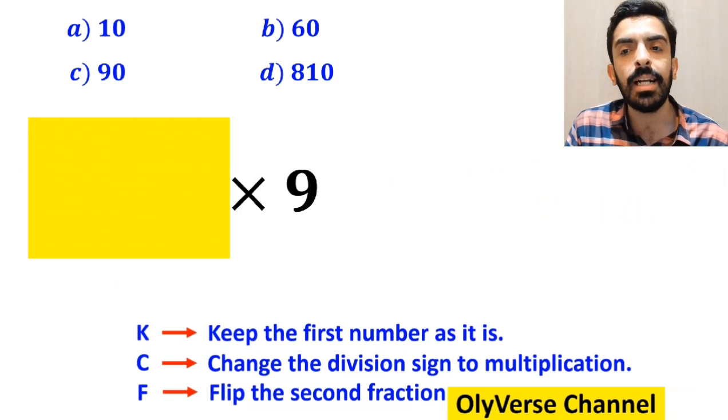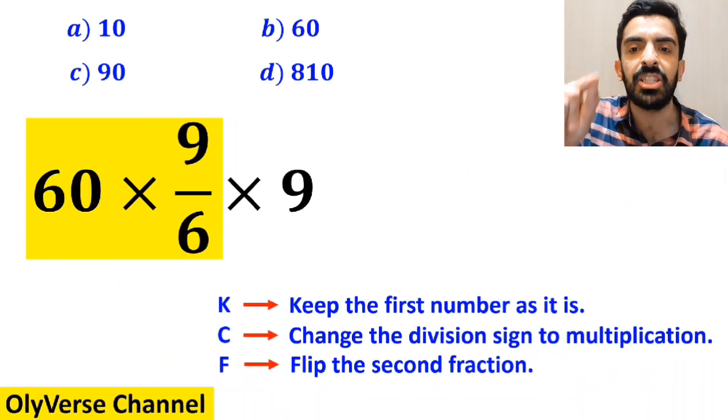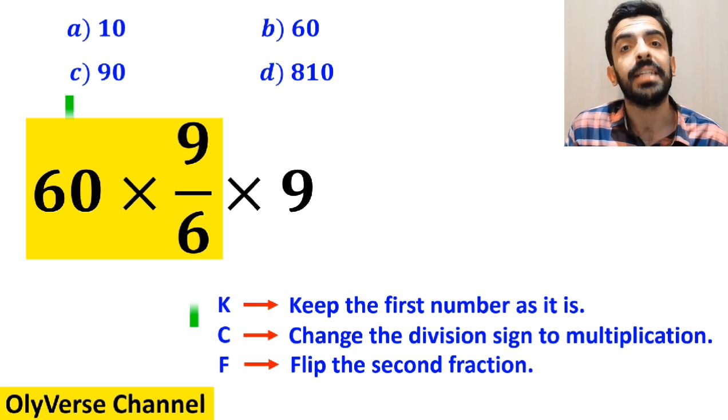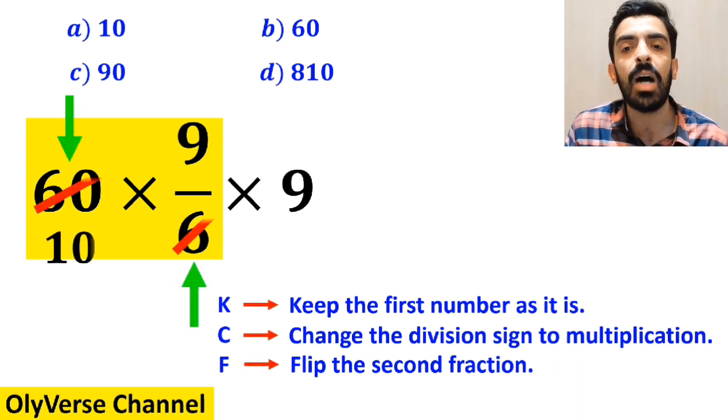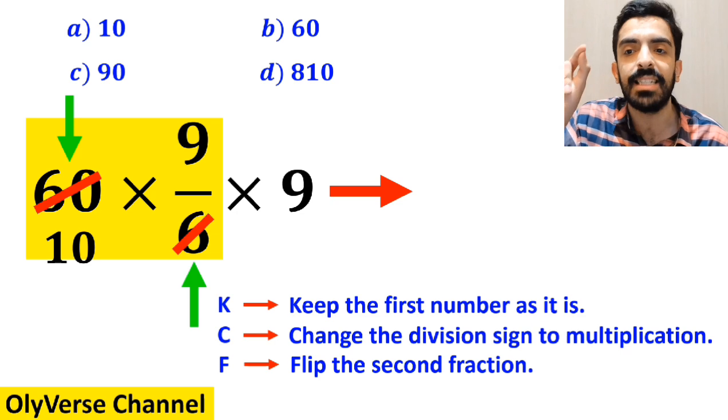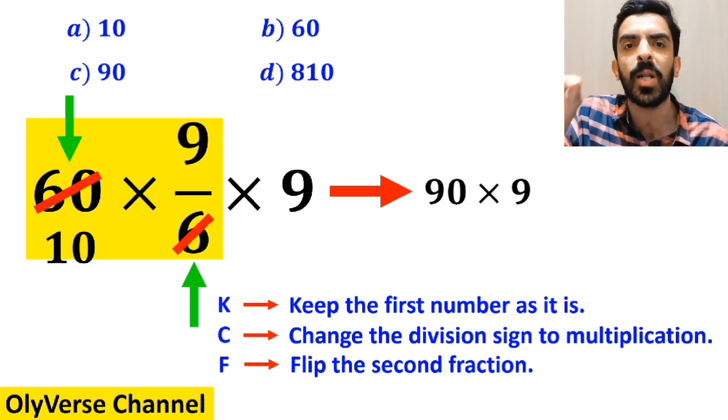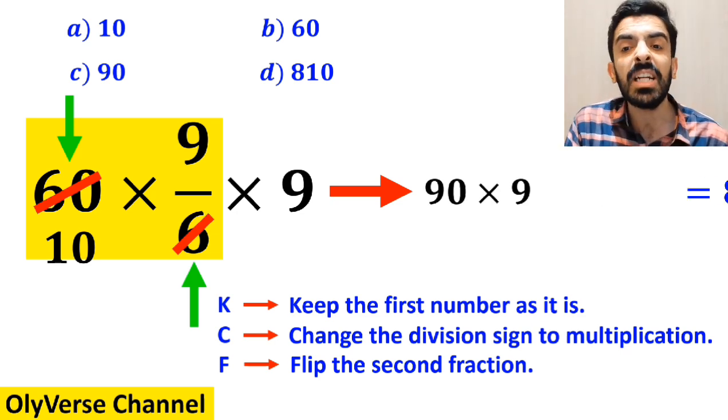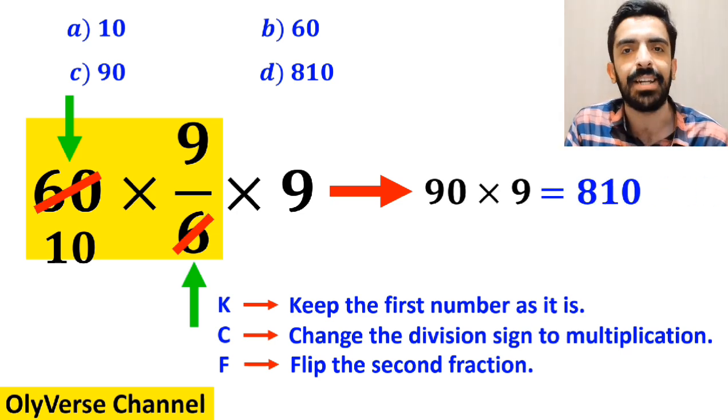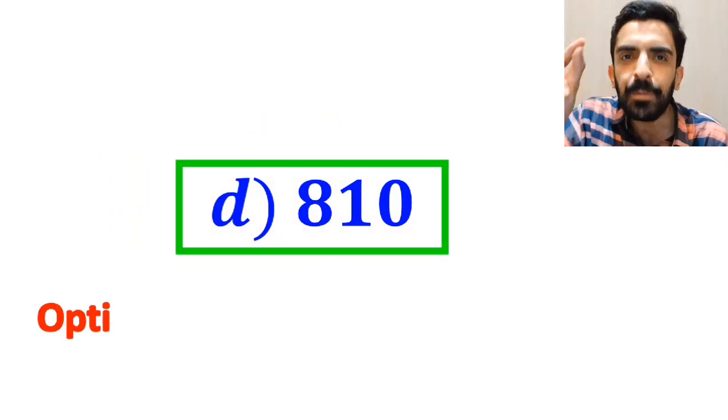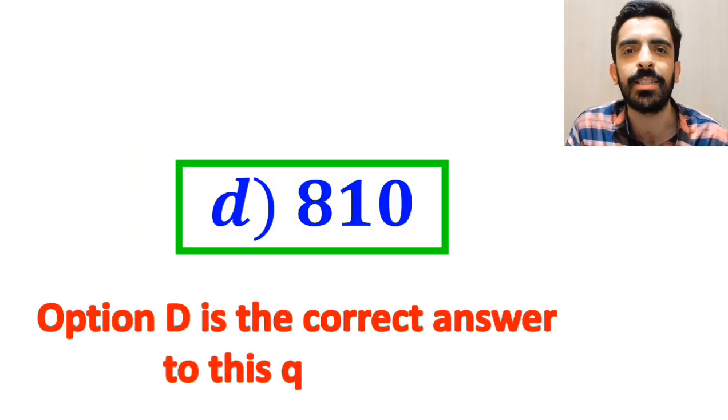So, we remove the highlighted part and replace it with 60 times 9 over 6. Now, the number 60 cancels out with the 6 in the denominator. And this expression simplifies to 90 multiplied by 9, which finally gives us the answer 810. Therefore, option D is the correct answer to this question.